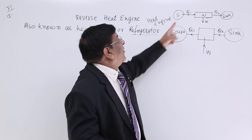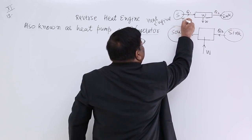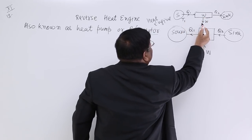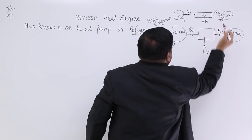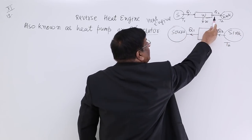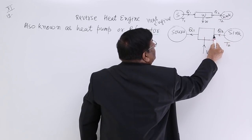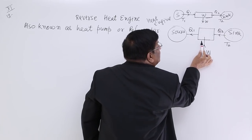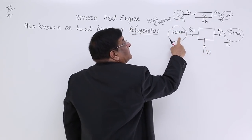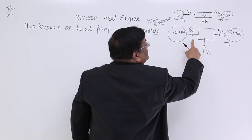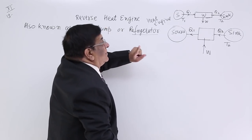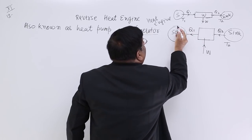In a normal heat engine, from the higher temperature T1, we take out heat. Some of that heat is used as work done by the substance, and the rest goes to the sink at lower temperature. In the reverse heat engine, this lower temperature is the sink and we take out heat Q2 from here, mix it with the work of the pump, and send it to the source — to the atmosphere. So this action is the reversal of a normal heat engine. Therefore this is known as a heat pump, a reverse heat engine, or a refrigerator. This is the schematic diagram of how a refrigerator works.